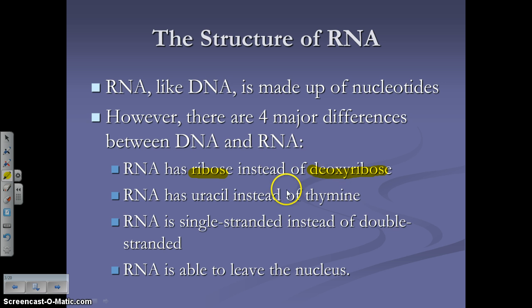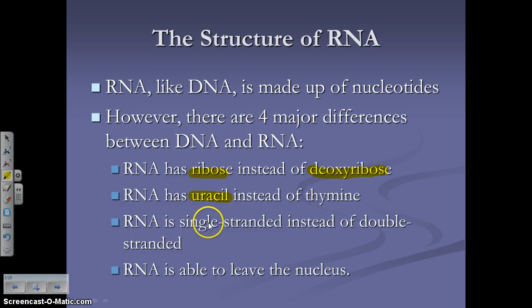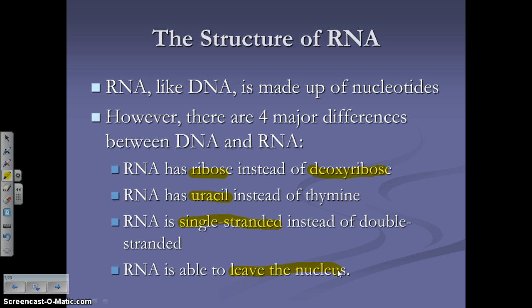Another difference is that instead of the nitrogen base thymine found in DNA, RNA has the base uracil — it still pairs with adenine, but thymine simply doesn't exist in RNA. A huge difference is that RNA is single-stranded while DNA is double-stranded. Because RNA is single-stranded, it's physically smaller and can fit through the nuclear pores of the nuclear membrane to leave the nucleus.